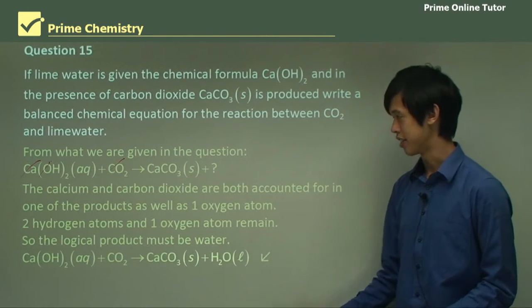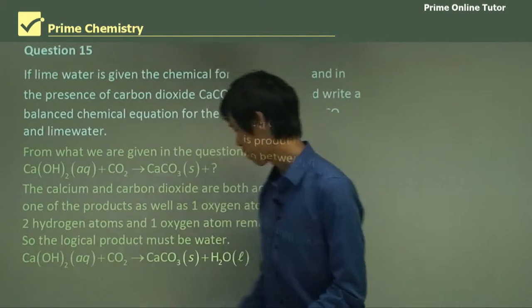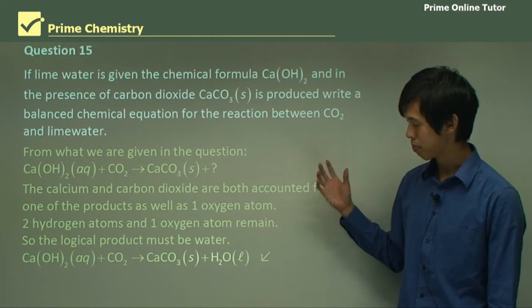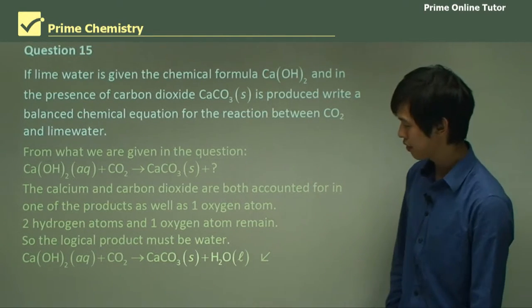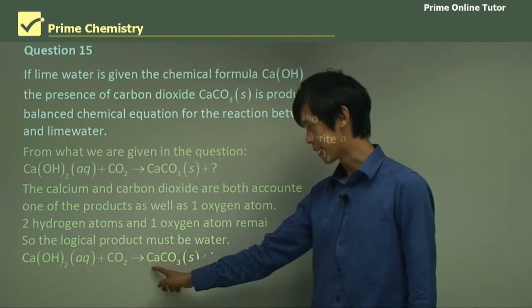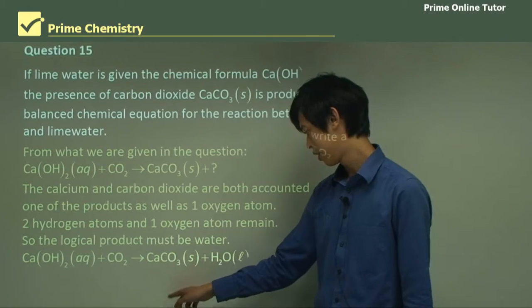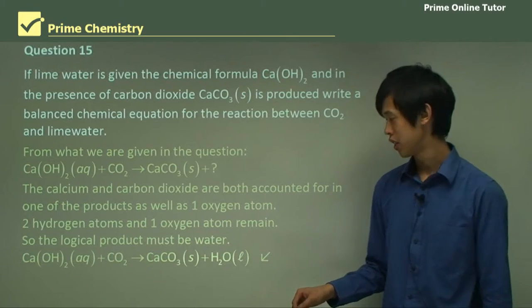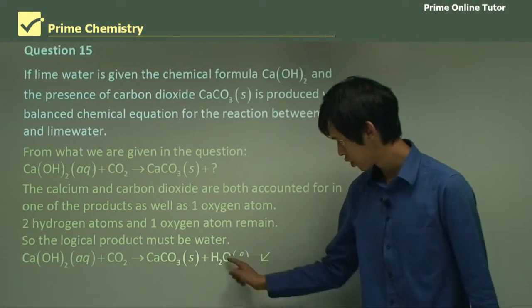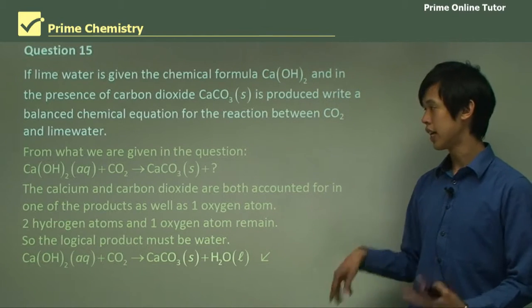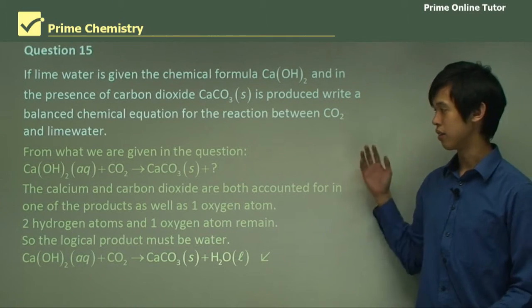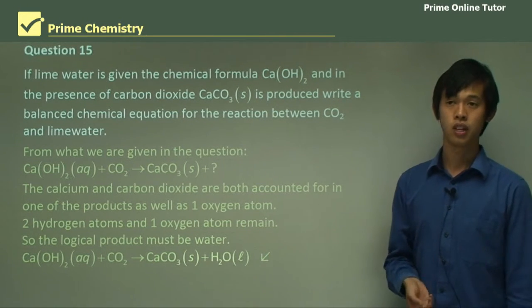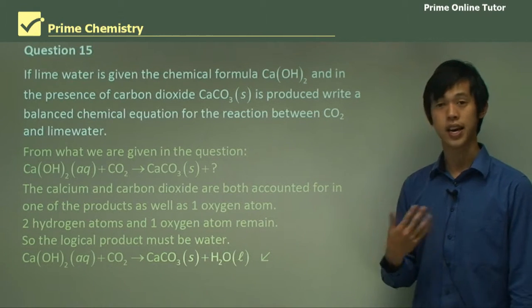So if we were to balance, try and just sanity check ourselves, you've got one calcium, one calcium, one carbon, one carbon, two four oxygens, three four oxygen, two hydrogen, two hydrogen. So it's all balanced. So again, this may not be the hardest question in the world, but it teaches you that if you just write down the things that you do know, it becomes very obvious what the answer should be.